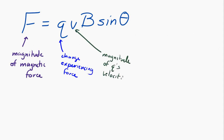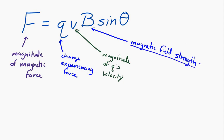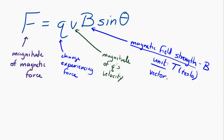Magnetic field strength is represented with the variable capital B. The unit of magnetic field strength is the Tesla, which is written with a capital T. It is a vector, but in this equation we're only taking the magnitude — the magnitude of the magnetic field strength.